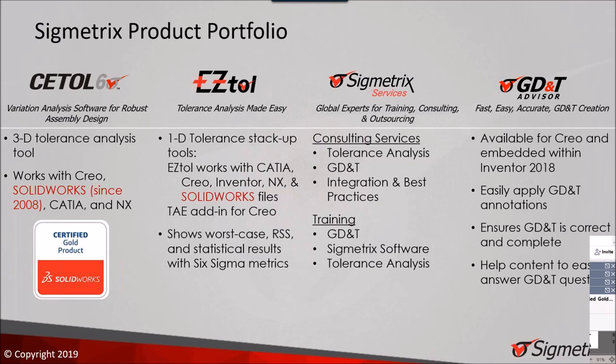The technology actually started before the company was formed. It stemmed from TI Defense Systems, which later was sold to Raytheon, and development started in the early 90s. So even though Sigmetrics itself is 20 years old, the software has almost another decade on top of that. The next product in our portfolio is EZTOL — a 1D tolerance stack-up tool that works with CAD files from many sources including SOLIDWORKS, intended for 1D stack-ups traditionally done in spreadsheets.